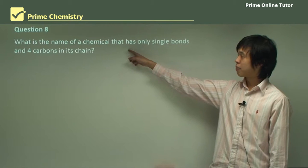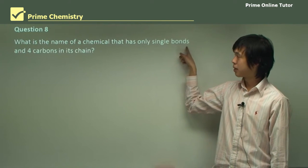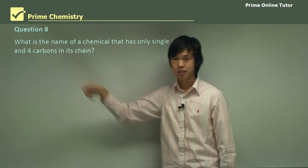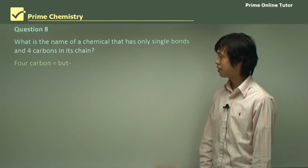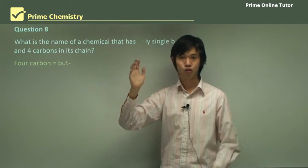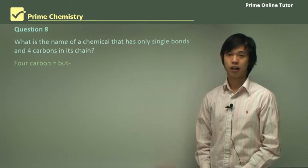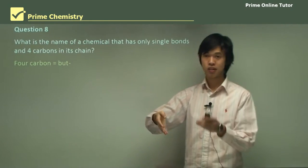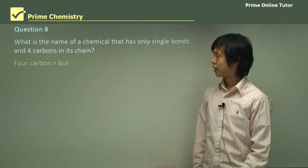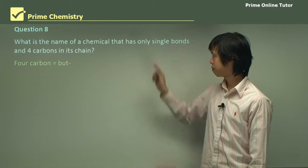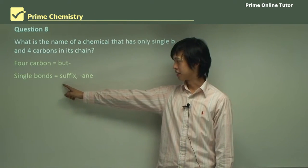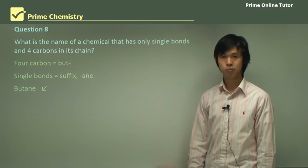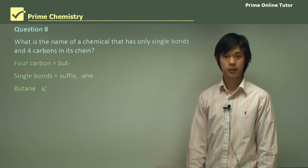What is the name of a chemical that has only single bonds and four carbons in its chain? Four carbons gives the prefix "but". It has only single bonds, so the suffix is of course "-ane". The final answer is butane.